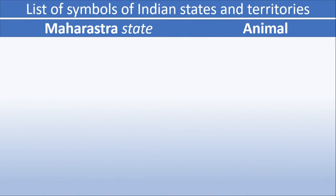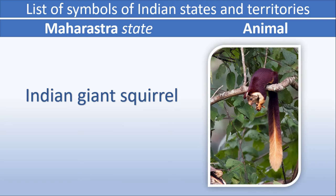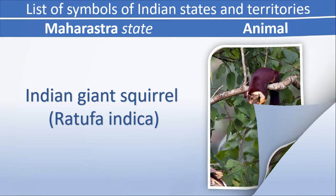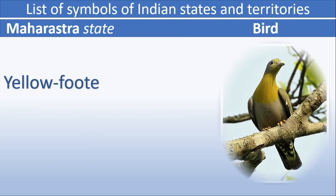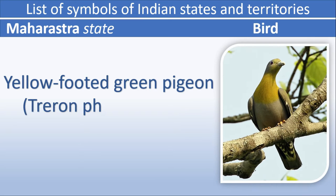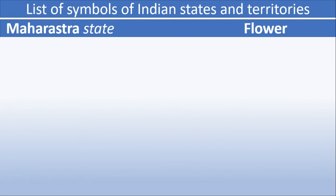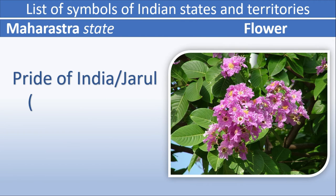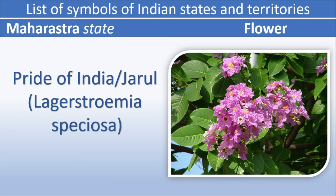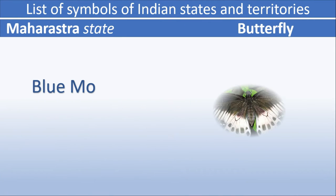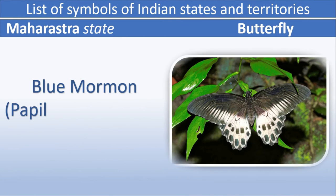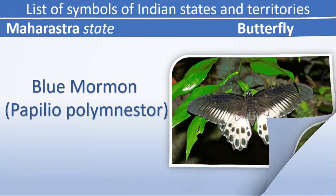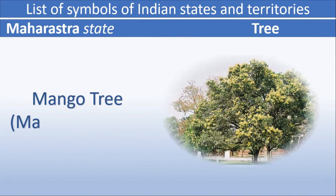Maharashtra animal: Indian Giant Squirrel. Maharashtra bird: Yellow-footed Green Pigeon. Maharashtra flower: Pride of India (Jharul). Maharashtra butterfly: Blue Mormon. Maharashtra tree: Mango Tree.